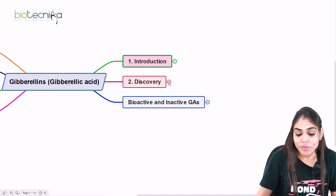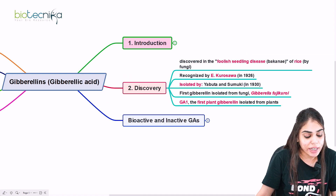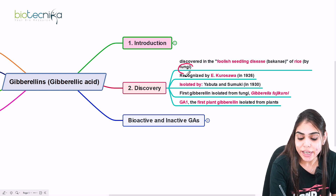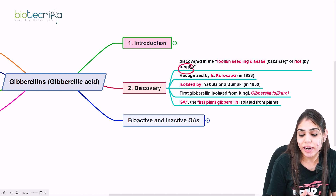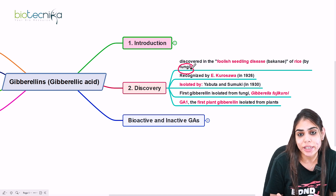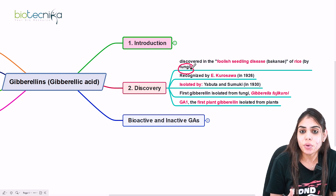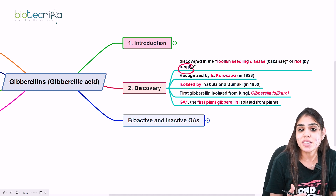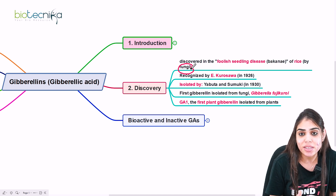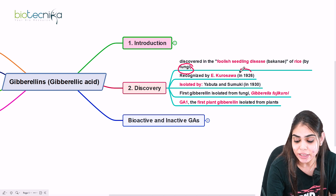Now let's come to the discovery of this phytohormone. For the first time it was discovered in a rice plant infected with the fungus Fusarium fujikuroi. It was observed that the fungus infecting the rice plant caused the plant to be abnormally tall, and after some time lodging occurred with reduced yield. This condition was given the name 'foolish seedling disease' or bakanae disease of rice. This was first recognized by E. Kurosawa in 1926.